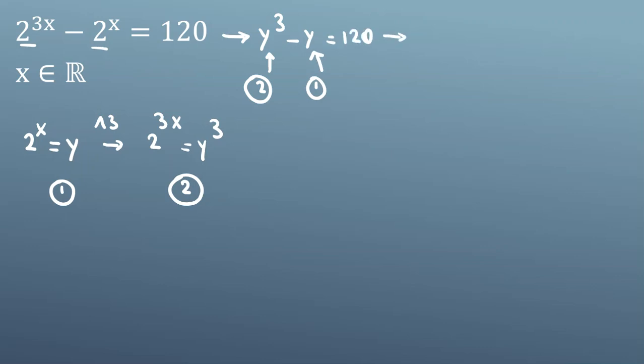Taking all terms to one side: y^3 - y - 120 = 0. Now we try to find at least one root, one value of y that satisfies this, so we can factor. If I replace y with 5, then 5^3 - 5 - 120 equals...